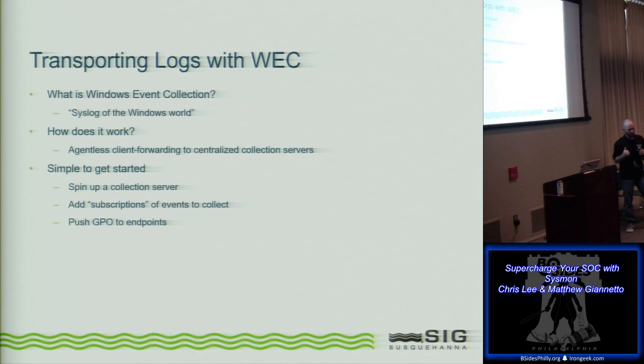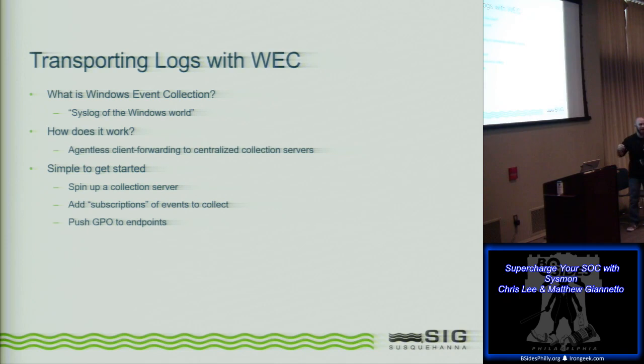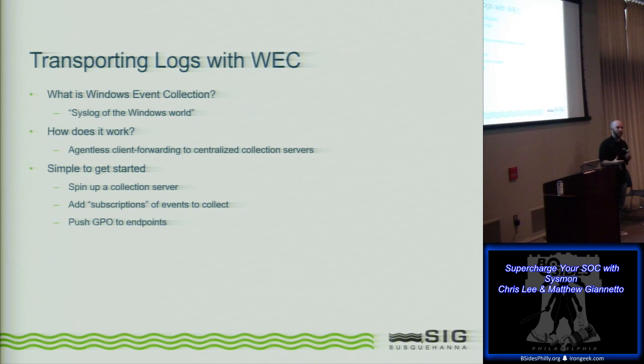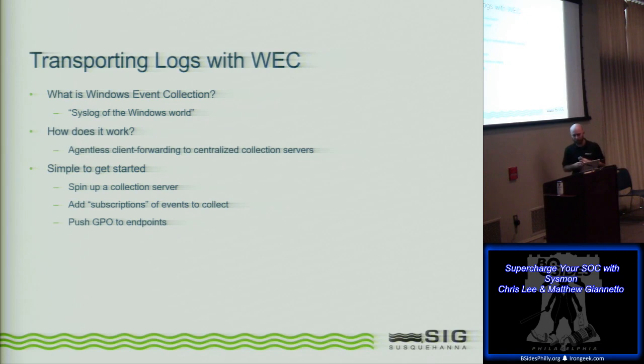Sysmon logs locally to the Windows event log but doesn't provide a means for transport. In an enterprise environment you need to get that data back to a SIEM or log management tool. We found we could do it for free and relatively easily with Windows Event Collection. Has anyone used Windows Event Collection before? It's native to Windows, agentless, and available on Server 2008 and up and Windows 7 and up. You can think of it as like a syslog for Windows — taking events and using GPOs to tell systems to send those events to a centralized collection server.